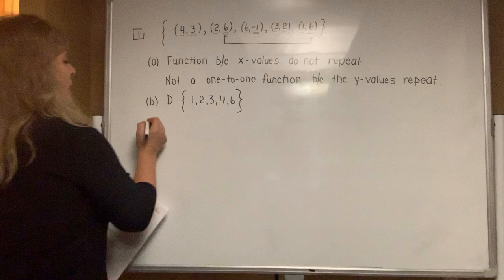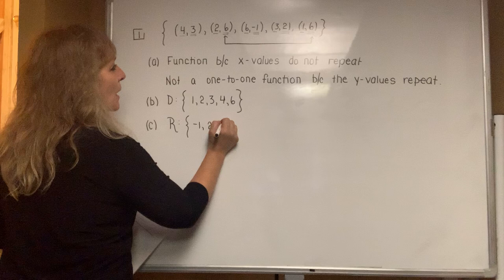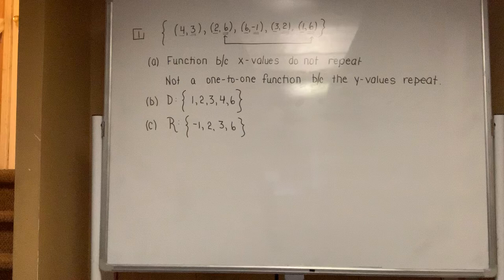Part C says, determine the range. The range is the list of y values in order from smallest to largest. So I see a -1, a 2, a 3, and I do see a 6. And even though it's repeated twice, you only list it once.